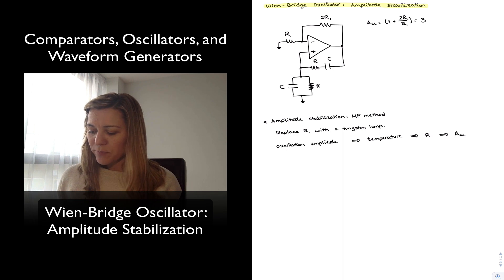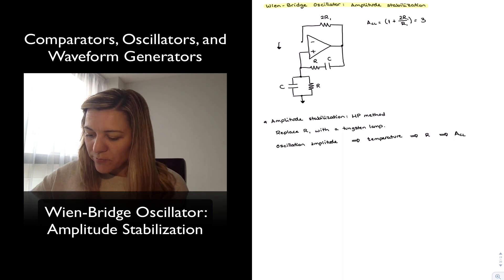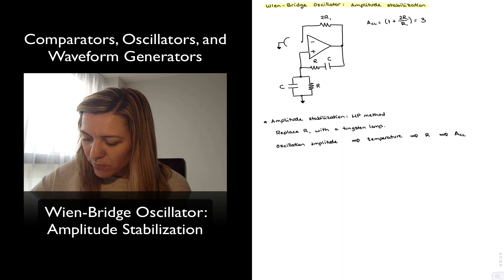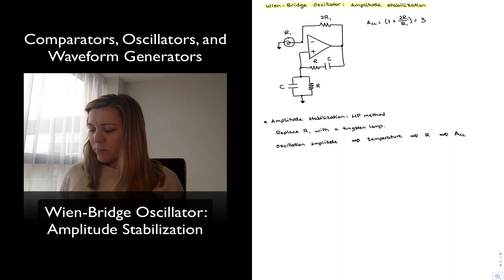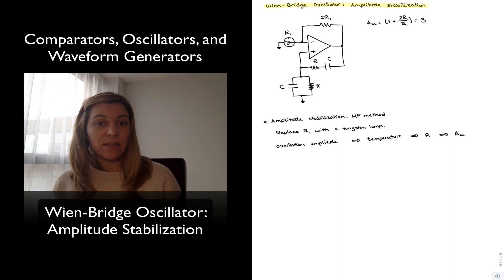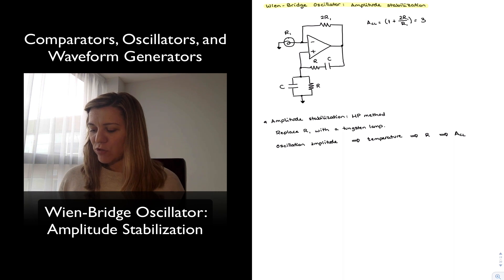The way that is achieved is replacing R1 with a tungsten lamp. And so I'm going to just replace it on that original circuit up there, and so this is basically my R1 now. And the idea behind it, the way it provides that negative feedback, is that as my gain of the circuit increases or decreases, the resistance in the tungsten lamp will increase or decrease in order to counteract that effect in the amplitude of the oscillation.